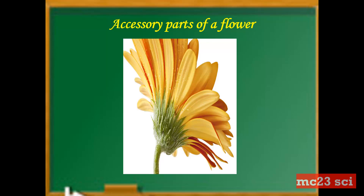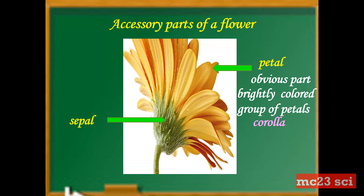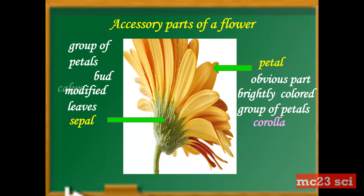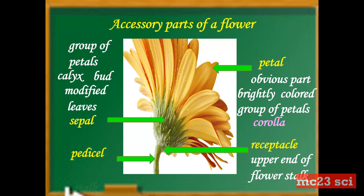These are the accessory parts of the flower. We have the petal, which is the obvious part of the flower and is brightly colored. The group of petals is called the corolla. Next is the sepal, which is what we call the modified leaves. It also protects the flower when it is still a bud. The group of sepals is called the calyx. We also have the receptacle, which is the upper end of a flower stalk, and the stalk or the pedicel.